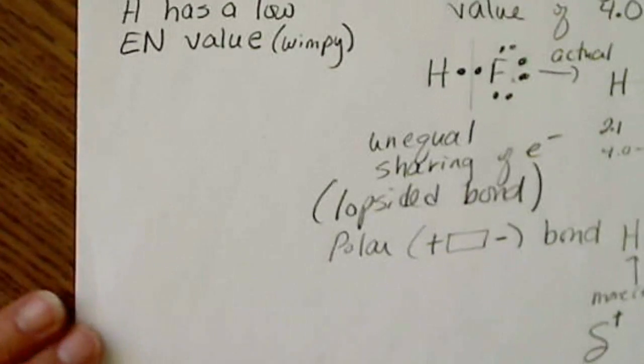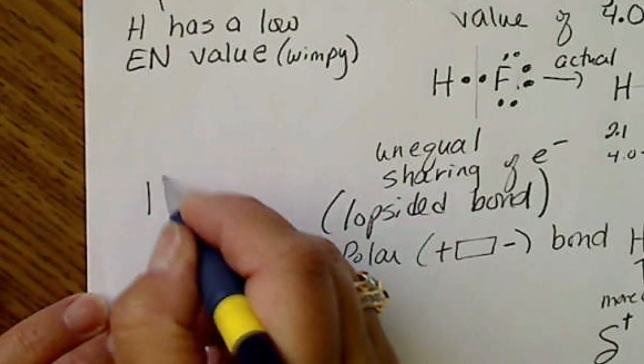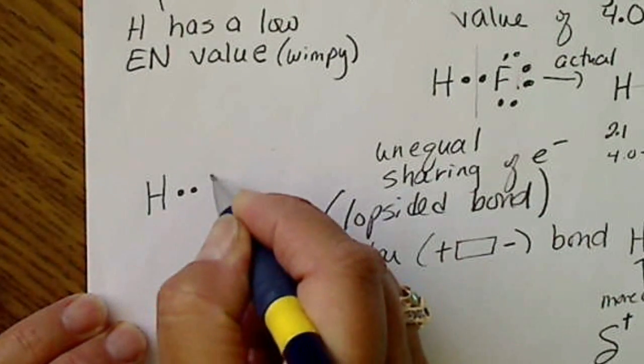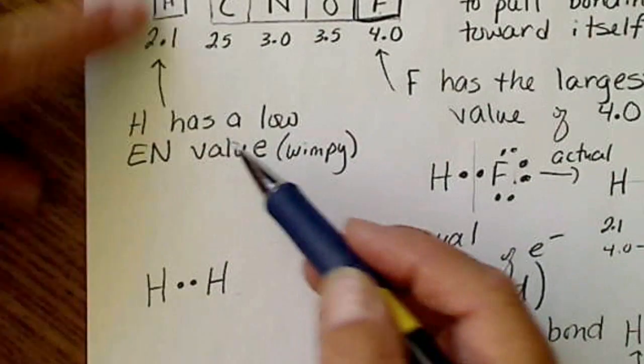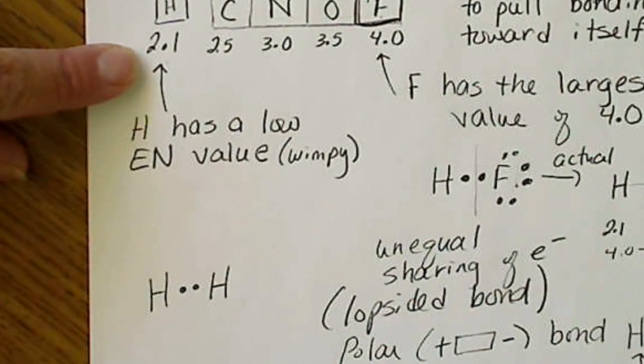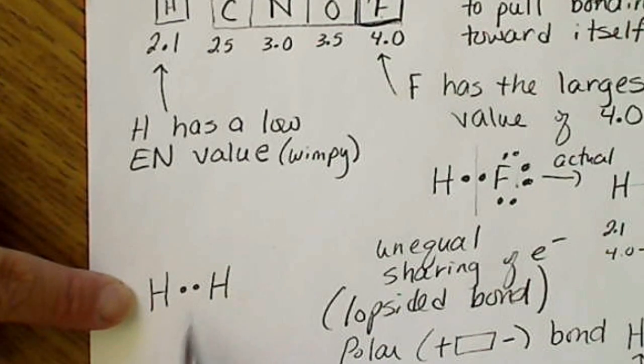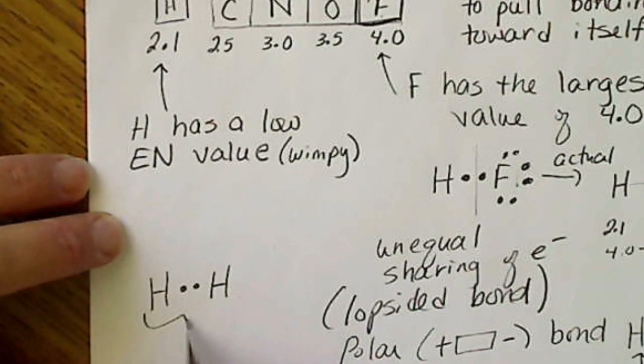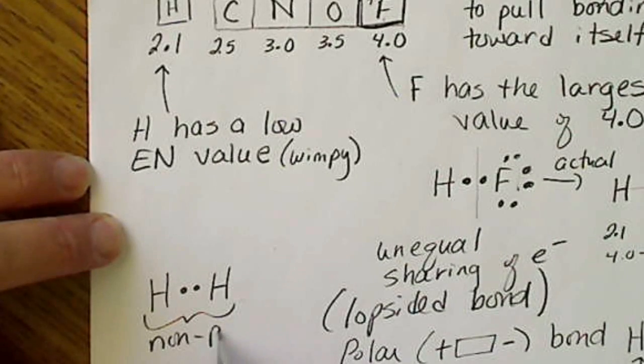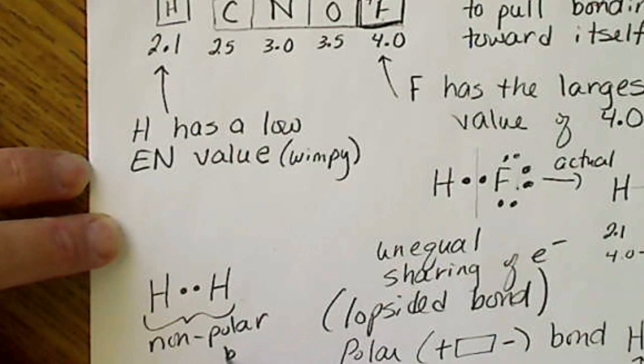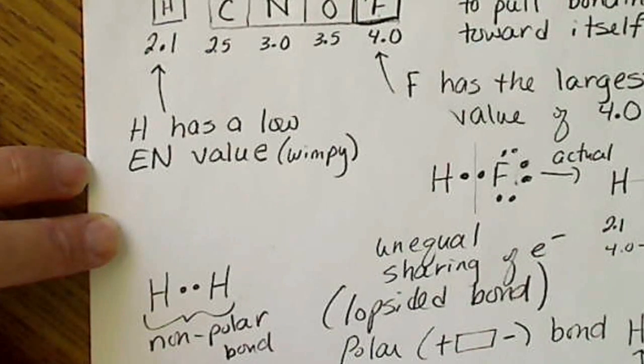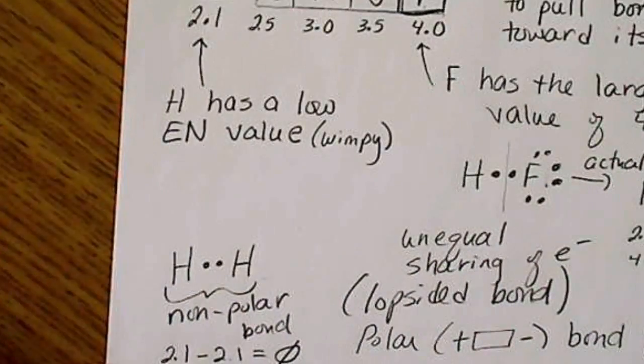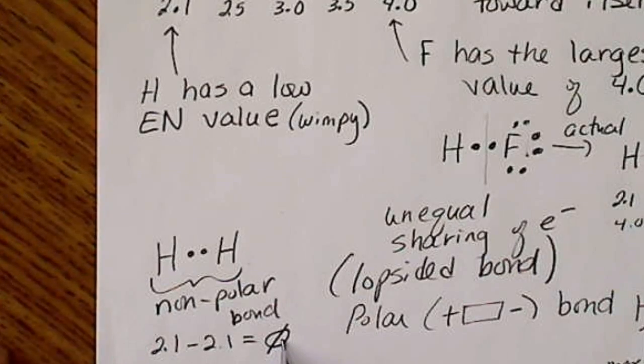If anything is bonded to itself, let's go back over here. Hydrogen, if it's bonded to itself, then because there is no difference in electronegativity, each hydrogen pulls electrons with equal ability. This would be a non-polar bond. Because if I take 2.1 minus 2.1, the difference in electronegativity values is zero.